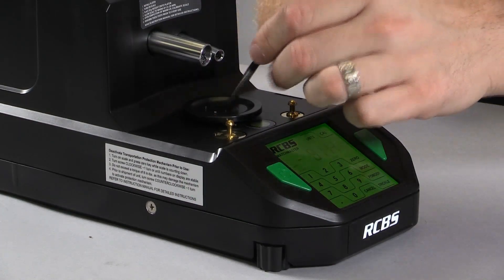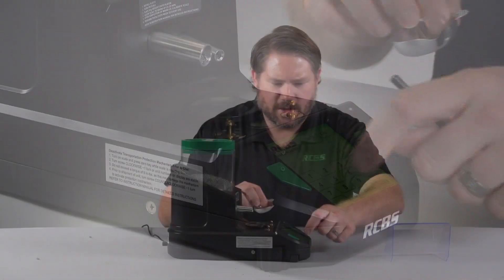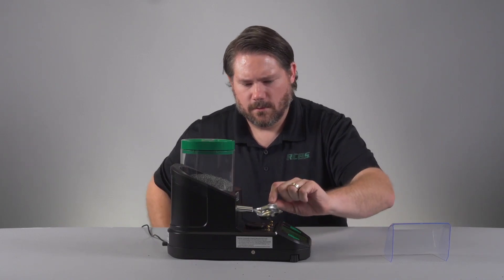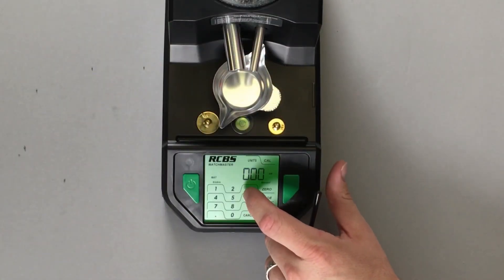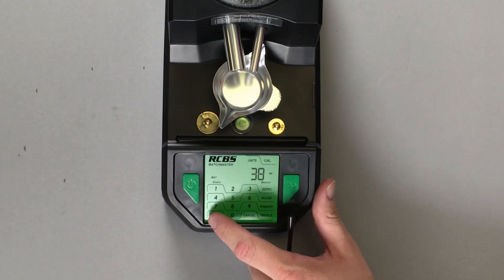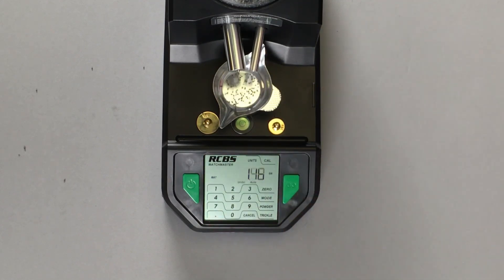Now we're going to go to powder dispense speed three. So let's cancel that so it doesn't auto throw. All right. Now we can try a dispense speed three and see if we get the results that we want. What we're looking for, we want to speed that that big tube stops two and a half to three grains away from our charge, possibly even two grains. That just allows a little bit quicker rate because the small tube doesn't have to trickle up as much.